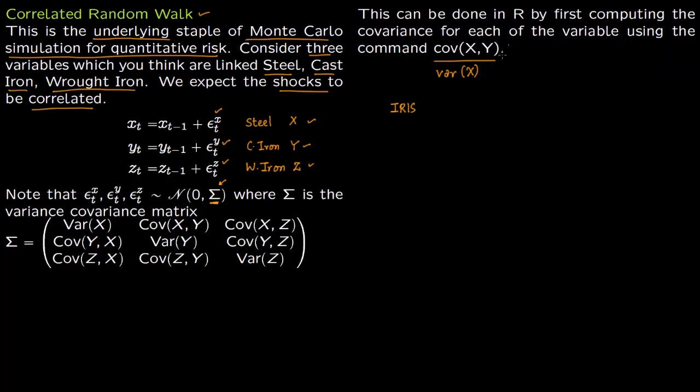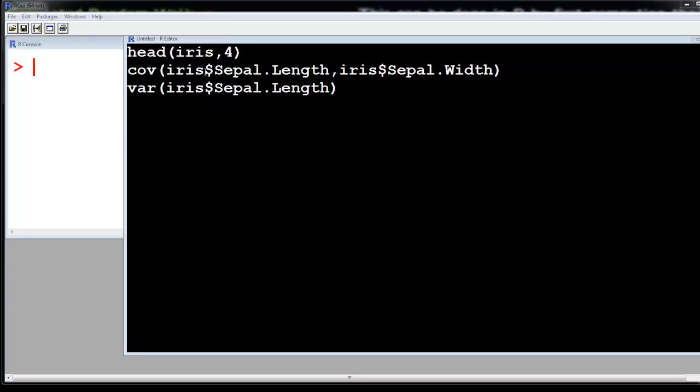Once you compute this covariance and variance, you fill this matrix Σ. You will get some numbers and you fill those numbers in here. We are going to use this iris data. I am writing head(iris,4) because we just want to see the first four lines. Although we will use the entire dataset, I just want to display the first four lines.